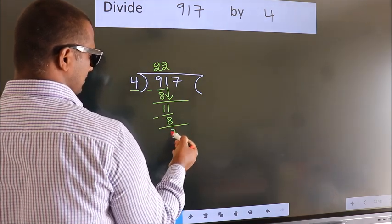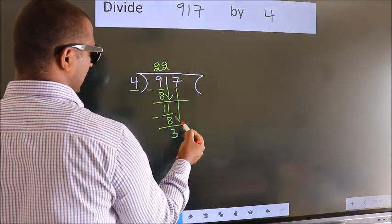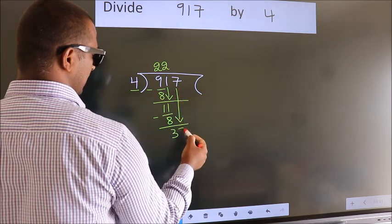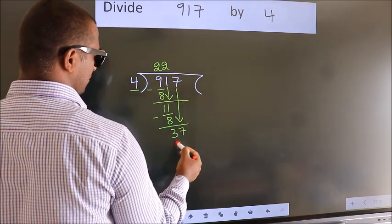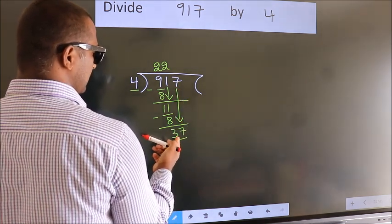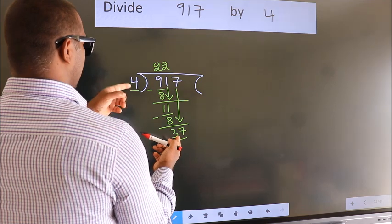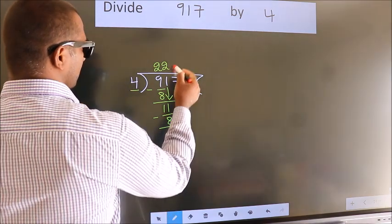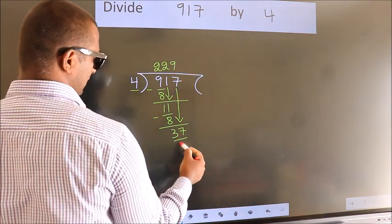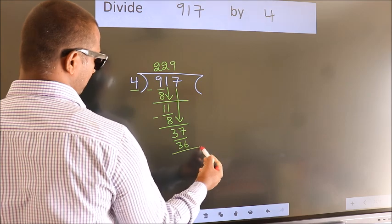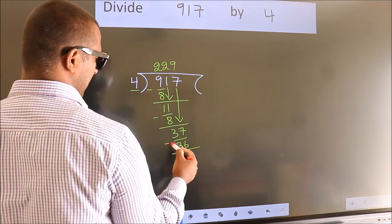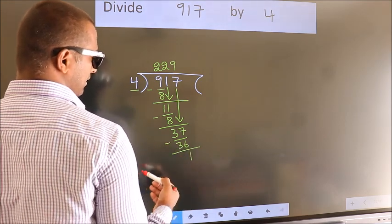After this, bring down the beside number, so 7 down, so 37. A number close to 37 in the 4 times table is 4 nines are 36. Now we subtract, we get 1.